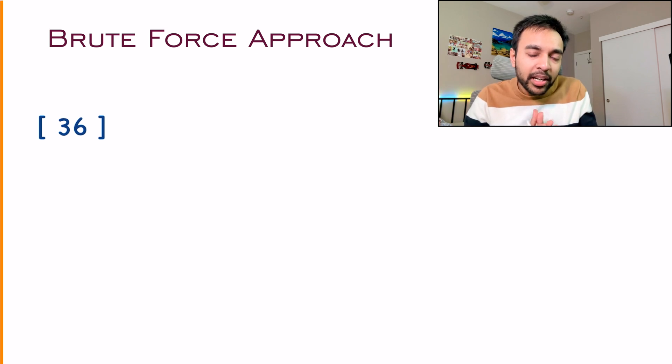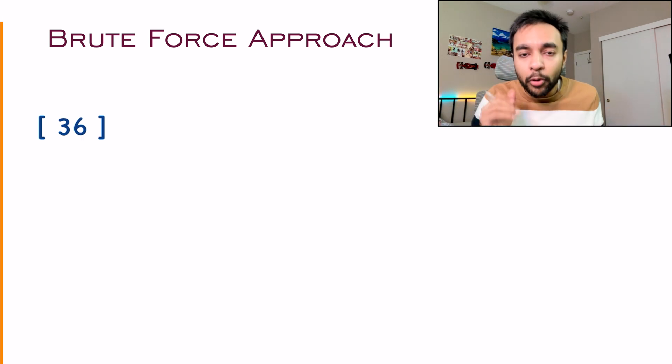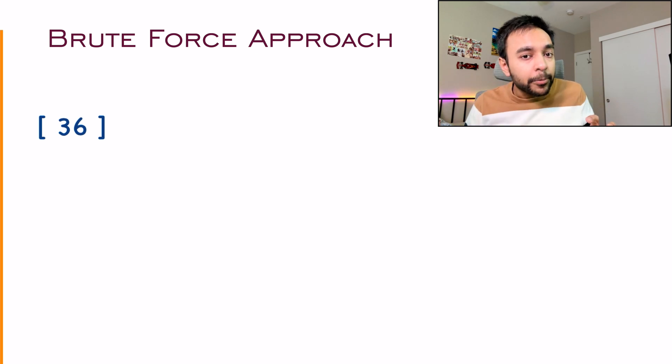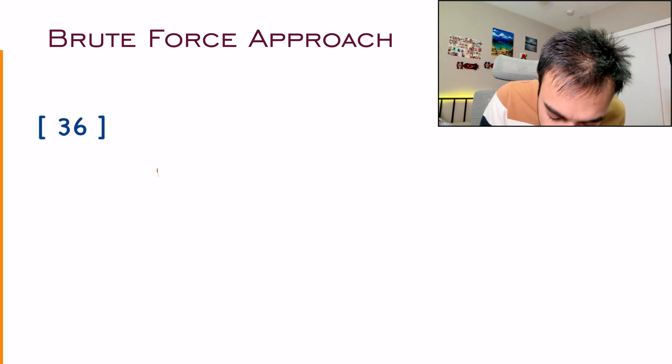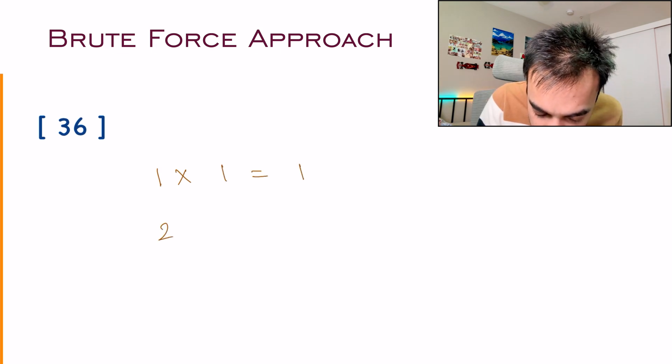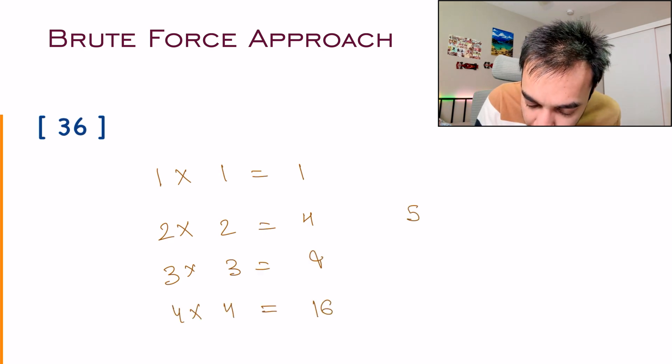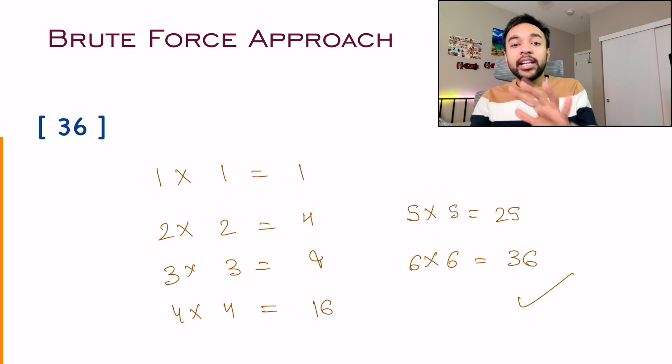Let us take up a number and then start to think about some solutions. I have 36. You know that 6 into 6 is 36. But how do you arrive there programmatically? One approach is that you use the brute force approach. That means you start from the first number and then keep on doing the squares of it. Then 3 into 3 will be 9, 4 into 4 will be 16. And then you go on. As soon as you get a 36, that means you found it and you can return a true.